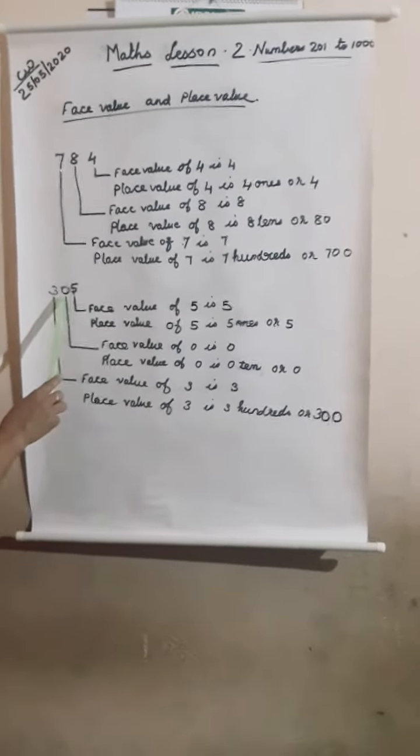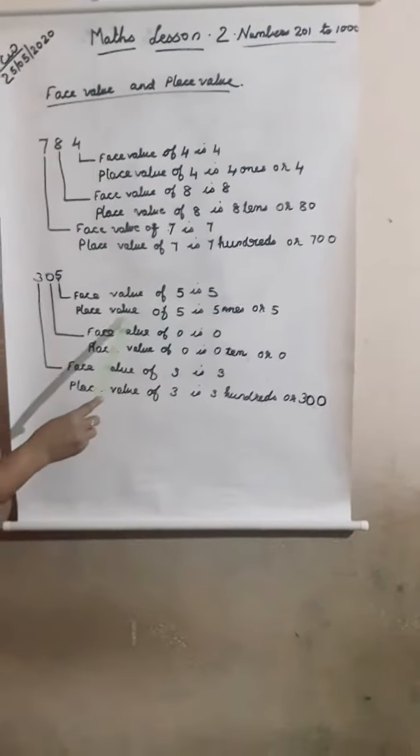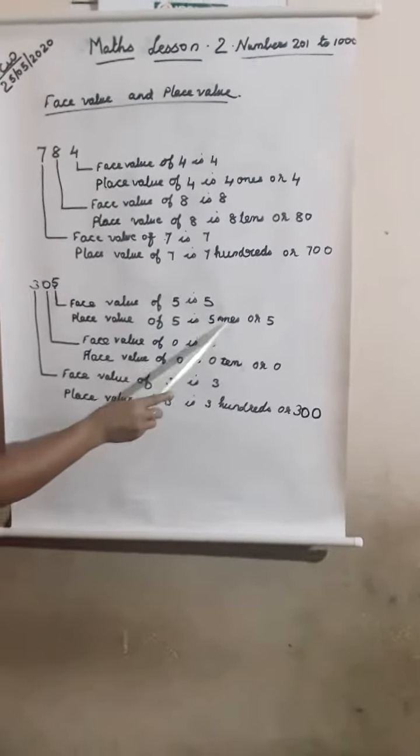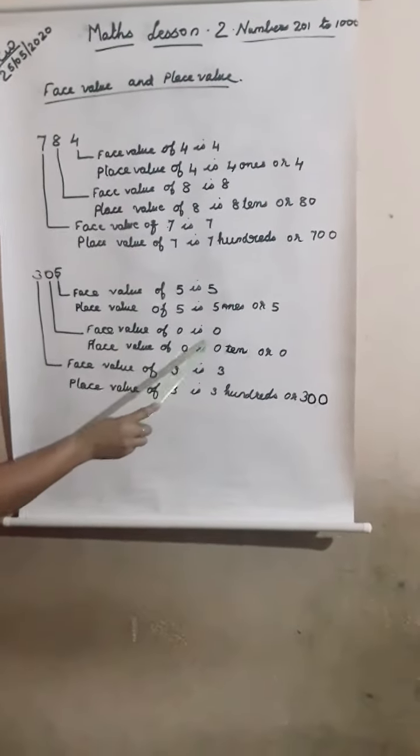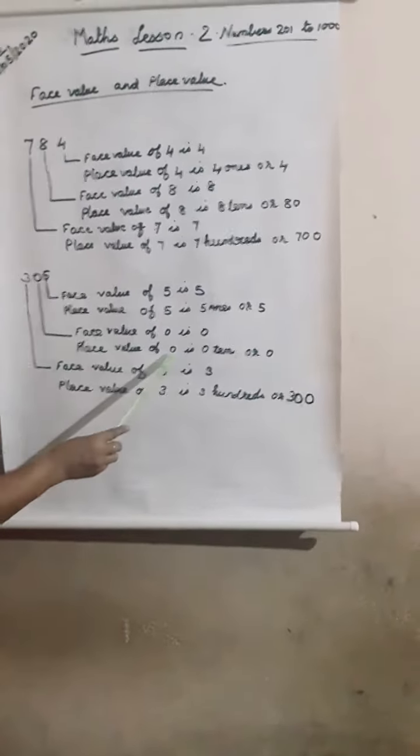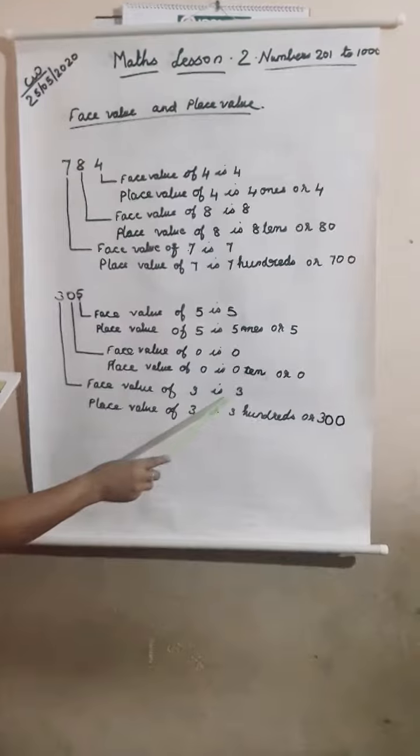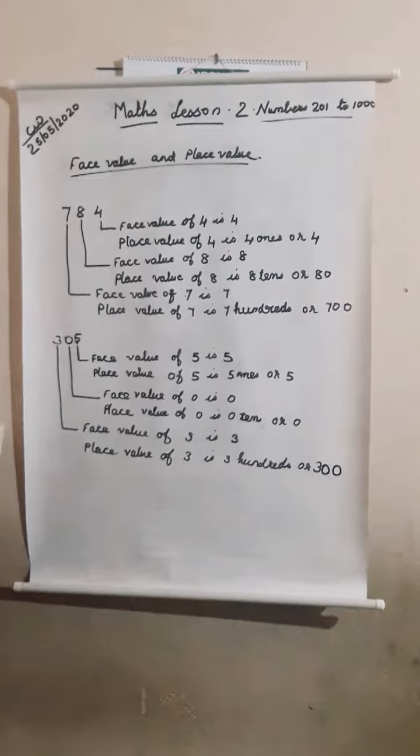Next number is 305. Face value of 5 is 5. Place value of 5 is 5 ones, or 5. Face value of 0 is 0. Place value of 0 is 0 tens, or 0. Face value of 3 is 3. Place value of 3 is 3 hundreds, or 300.